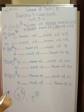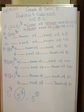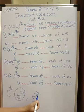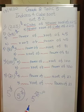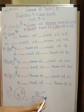If it is 5 raised to 1 upon 3, we know that denominator is always a root, so this was third root of 5. Now if there is numerator as well as denominator, numerator will be power index and denominator will be root.